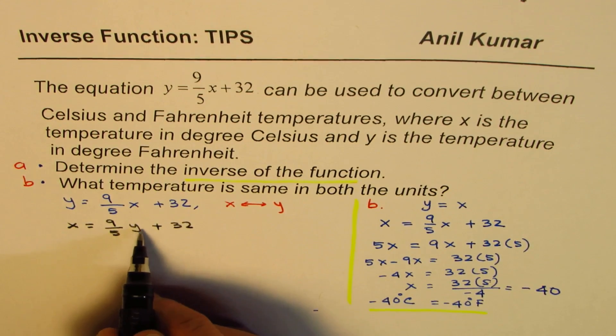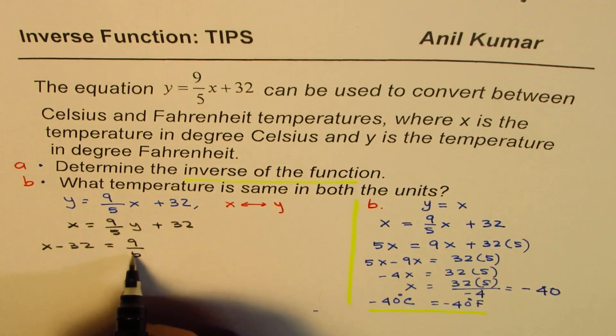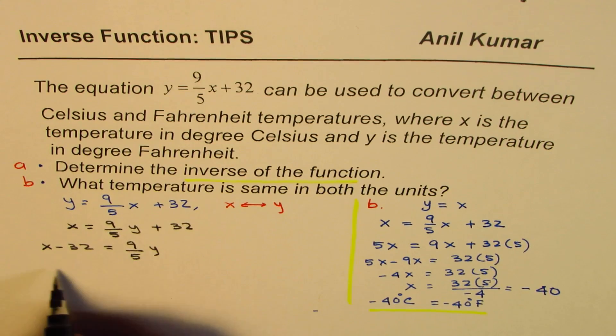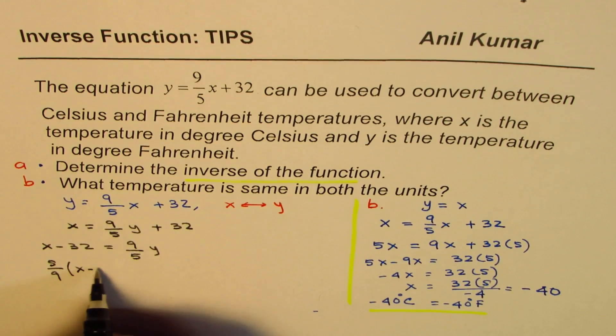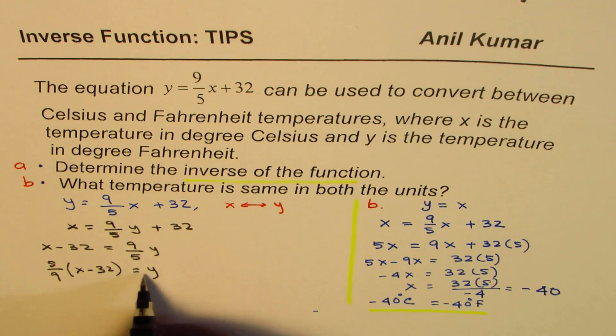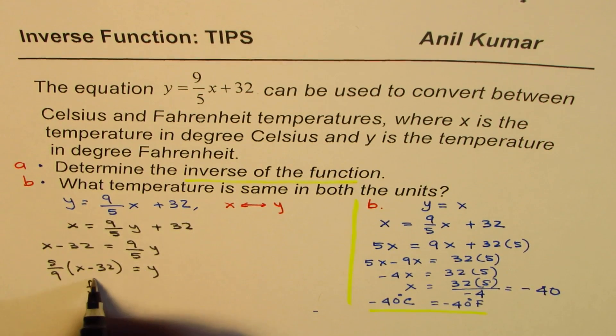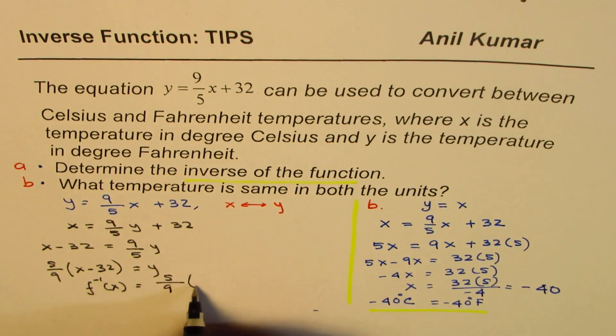What we get here is x is equals to 9 over 5y plus 32. We need to solve for y. So it is x minus 32 equals to 9 over 5y. And then we will multiply by 5 over 9 both sides. So we get our function in terms of y. And that gives us the solution which is f inverse of x is equals to 5 over 9 times x minus 32.